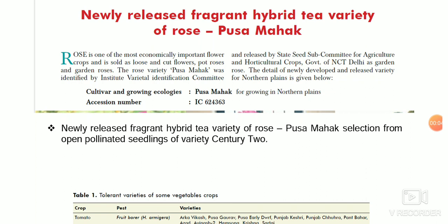Hello friends, welcome once again. Today I am here to cover Indian Horticulture magazine January-February volume of 2020. The first question is the newly released rose variety Pusa Mehek, which is developed by selection from the variety Century.